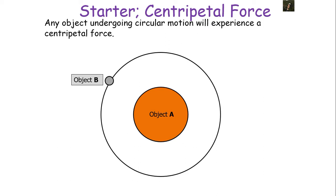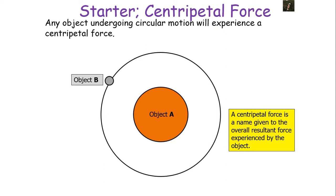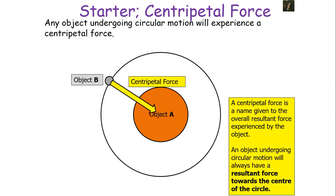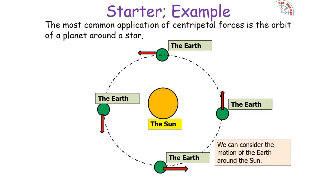Any object undergoing circular motion will experience a centripetal force. A centripetal force is the name we give to the overall resultant force experienced by an object — we only consider the resultant effect. The resulting force of a centripetal force will always be towards the centre of the circle. The most common application of centripetal forces is the orbit of a planet around a star, or the orbit of any satellite around a massive body.